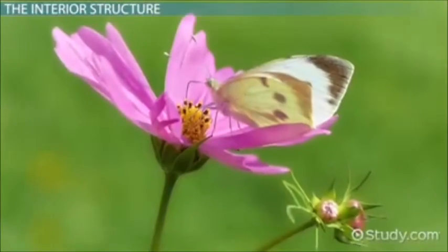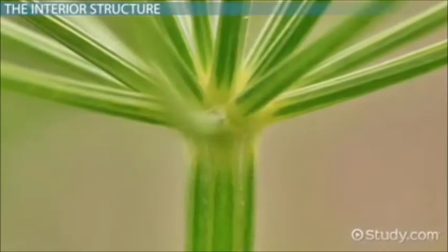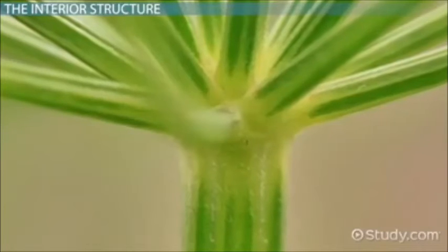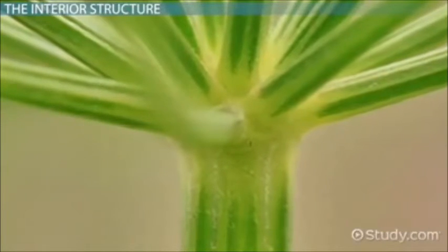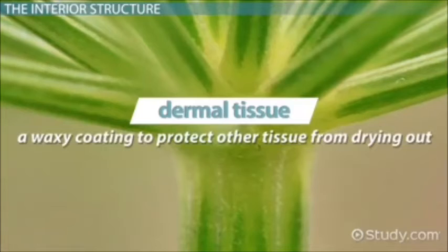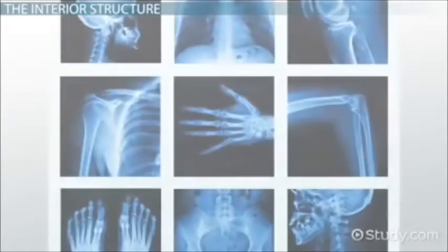Inside the shoot are primary and secondary tissue structures. There is dermal tissue that acts similar to our skin, the ground tissue that acts to give support to the plant, and finally the vascular tissue. The dermal tissue acts as a waxy coating to protect other tissue from drying out. The ground tissue is around the vascular tissue and helps give the plant the support it needs, similar to a skeleton.